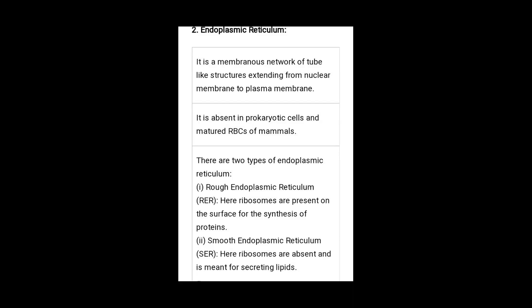Ribosomes are the protein factories — they synthesize protein. Rough endoplasmic reticulum also synthesizes protein because ribosomes are present on its membrane. Smooth endoplasmic reticulum produces and transports lipids. Key questions: which ER synthesizes protein? Rough ER. Which ER synthesizes lipid? Smooth ER.